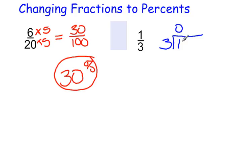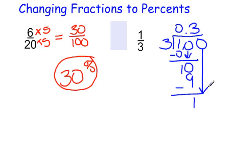3 does not go into 1, so we have to add our decimal and a 0. Bring down the 0. 3 goes into 10 three times. 3 times 3 is 9. 10 minus 9 is 1. Add another 0 and bring it down.